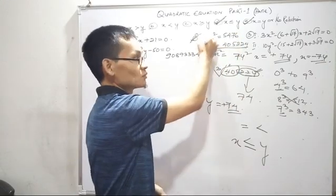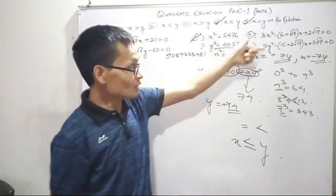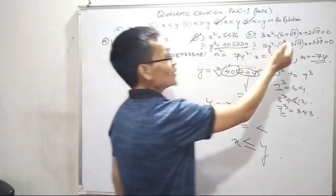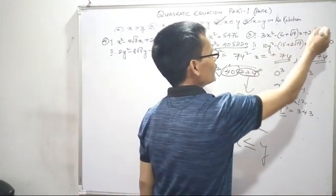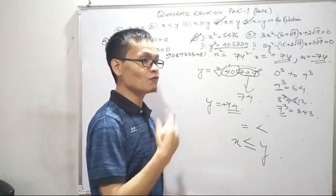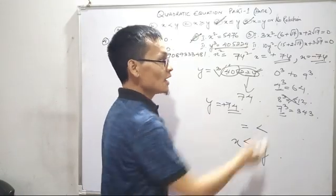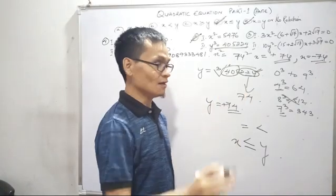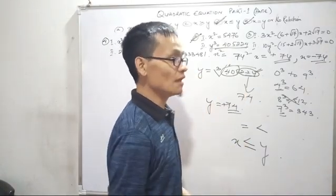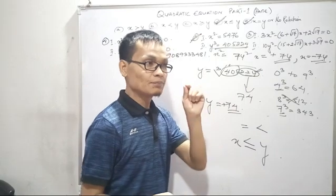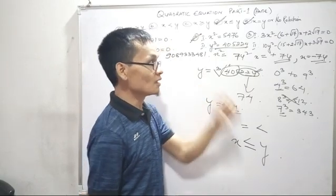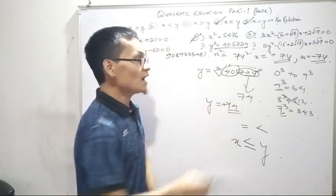Question number 2, question number 3. Root over of 17 — the value is 4.123. 4.123, 4.0 something, 5.0.